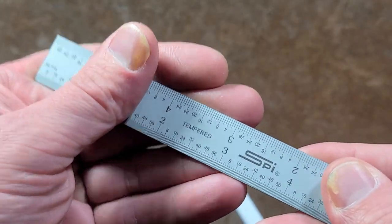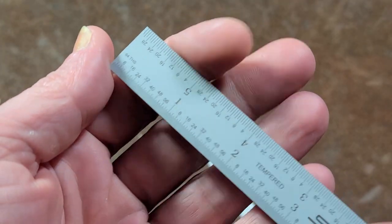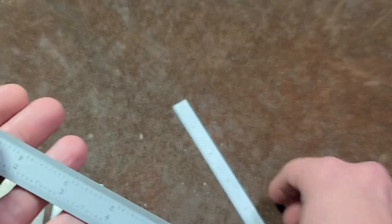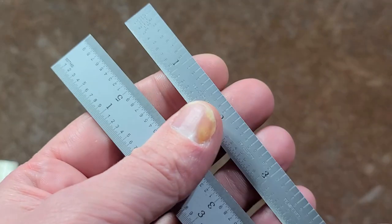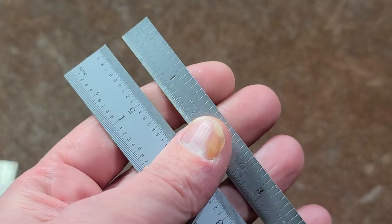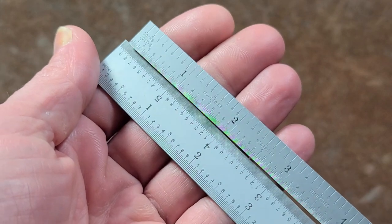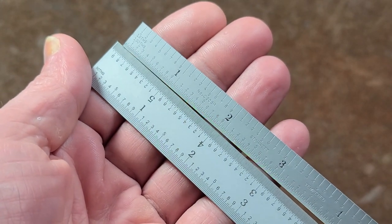I have an SPI here, which is a standard machinist rule. This is a rigid rule, where that would be considered a flexible rule. And if we look at this one, we'd say it's pretty similar. If we look at these graduations here, you can see that they both look pretty nice. But you can actually see...